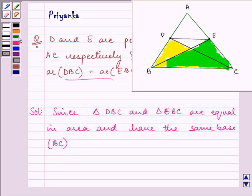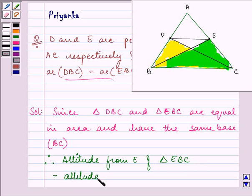Therefore, altitude from E of triangle EBC is equal to altitude from D of triangle DBC. Right.